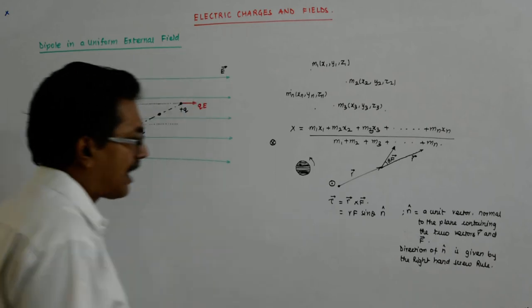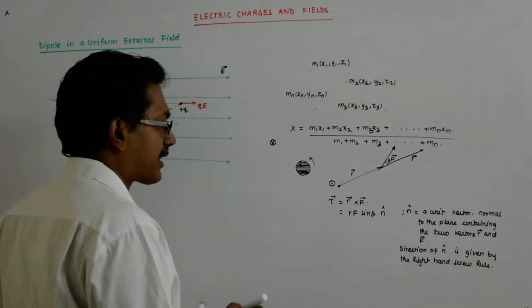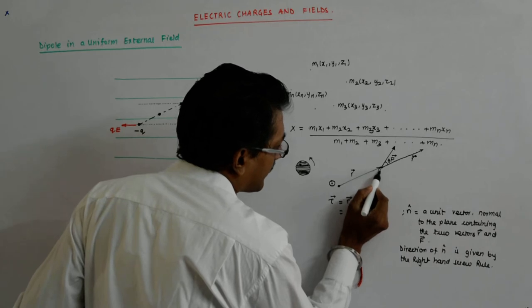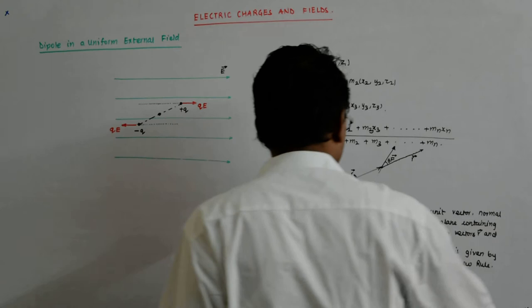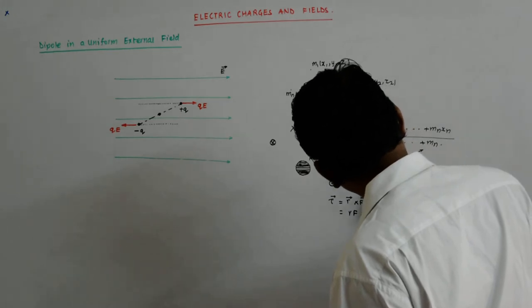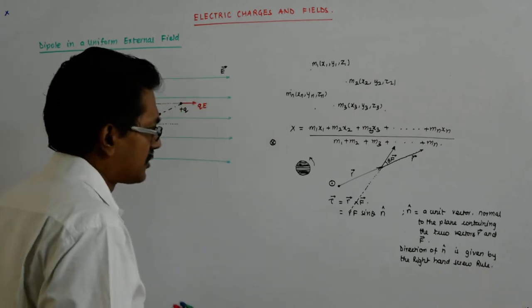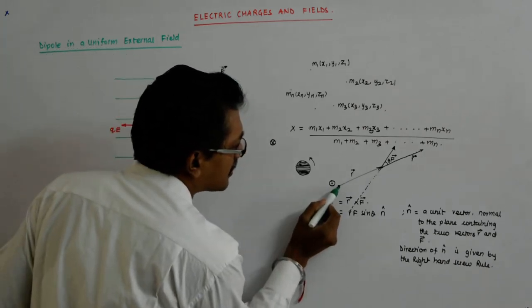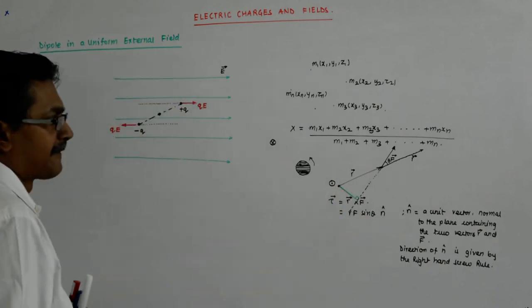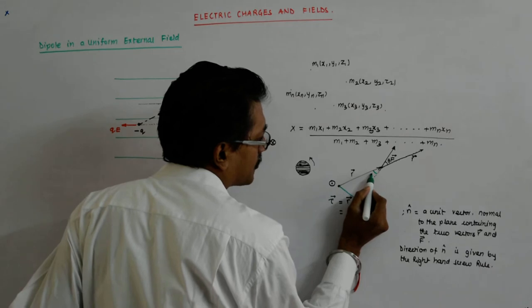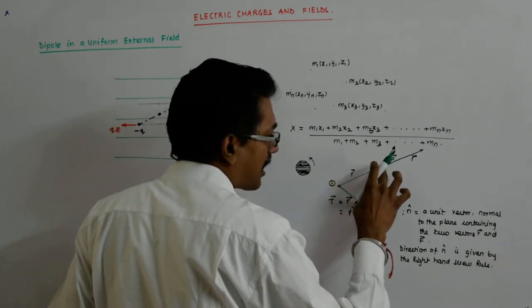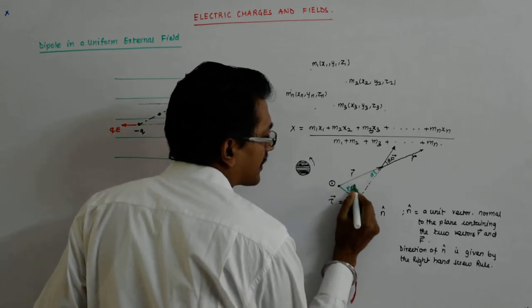I have the torque — the magnitude of the torque — as rF sinθ. Now, if I extend this line of action of force and look at this distance: since they are vertically opposite angles, this angle is also θ. This is r, so this is r cosθ, while this is r sinθ.